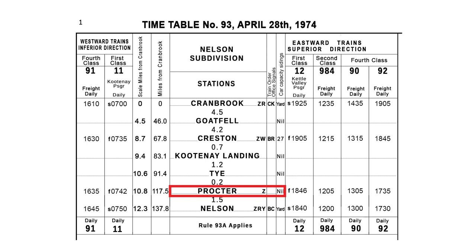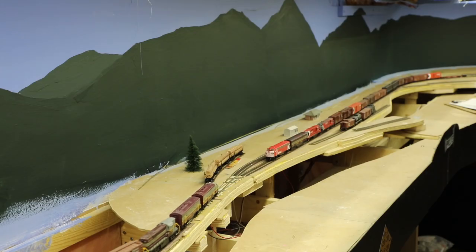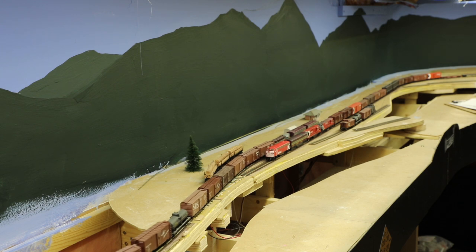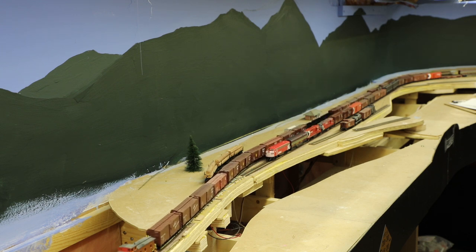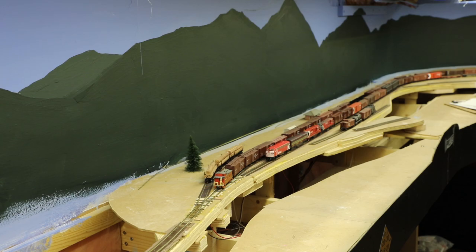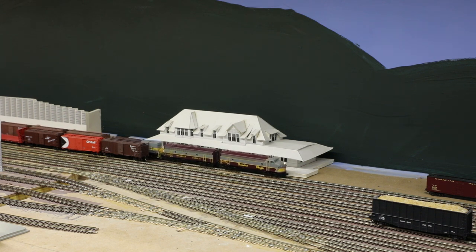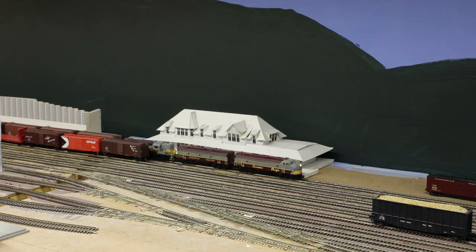Proctor, where the meet is happening, is not set up as an order station, so there's no need to OS. 4031 will be waiting in the siding and we can go straight through to Nelson.